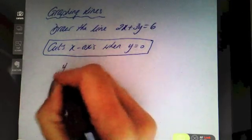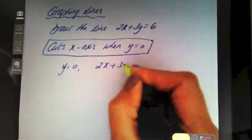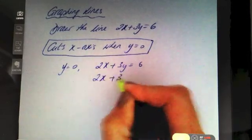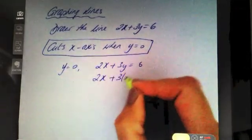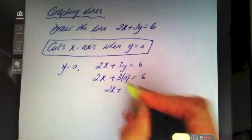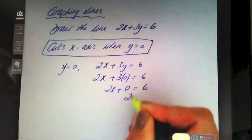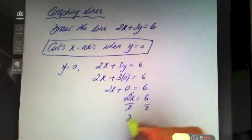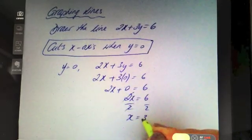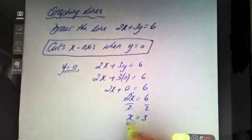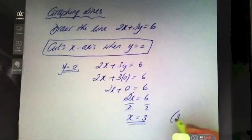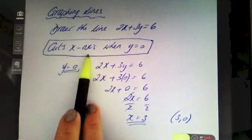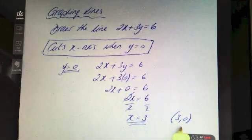Substituting y = 0 into 2x + 3y = 6: we get 2x + 3(0) = 6, so 2x = 6, and dividing both sides by 2 gives x = 3. So when y = 0, x = 3, meaning the point (3, 0) is where the line cuts the x-axis — that's one point we can now plot.